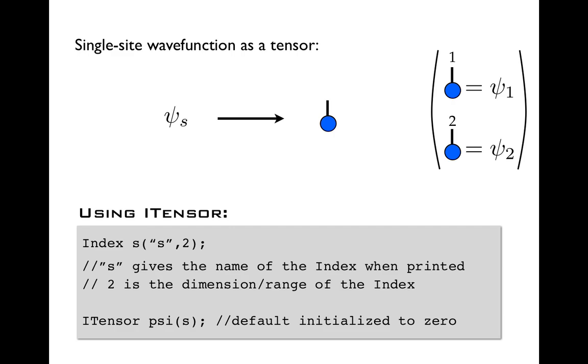So once we have this index, we can plug it in now to the itensor constructor, and that will create a new itensor. Here we've bound it to the variable psi, and this itensor will have this one index s, so it will be a rank one or order one itensor, and all of its components will be default initialized to zero, just for convenience.